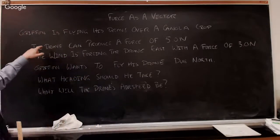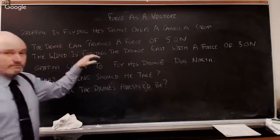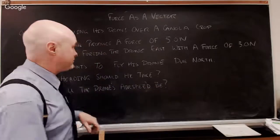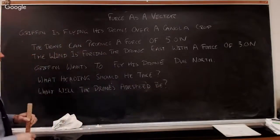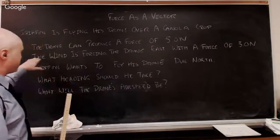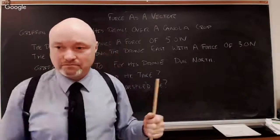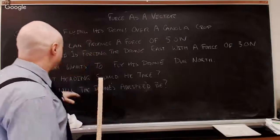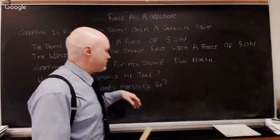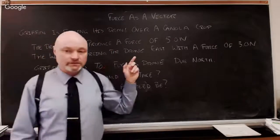Here's the first one. Griffin Thomas, who is going Canada-wide by the way, is flying his drone. He doesn't have a drone, but that's beside the point, over a canola crop, and it's not his canola crop. The drone can apply a force of five newtons. That's what its little propellers can do. The wind is forcing the drone east with three newtons, but Griffin wants to fly his drone due north.